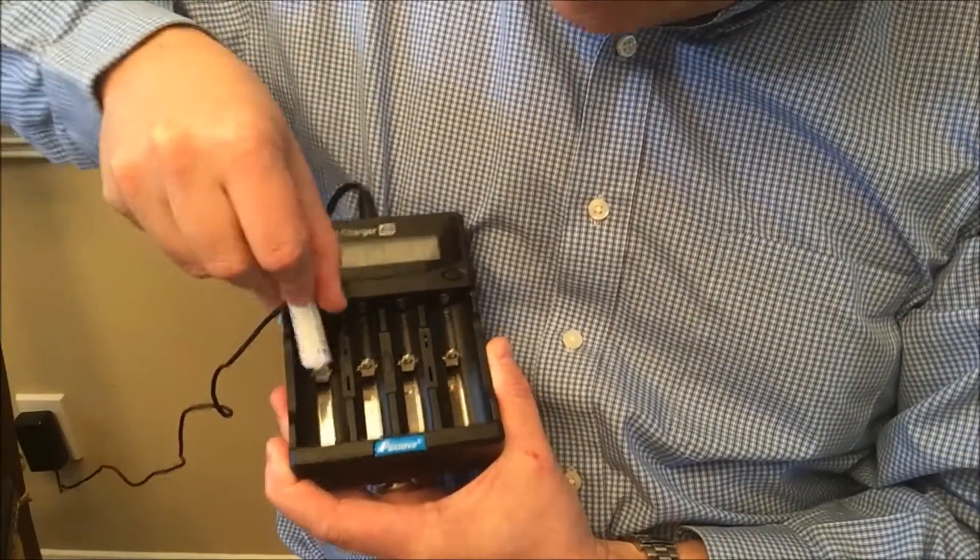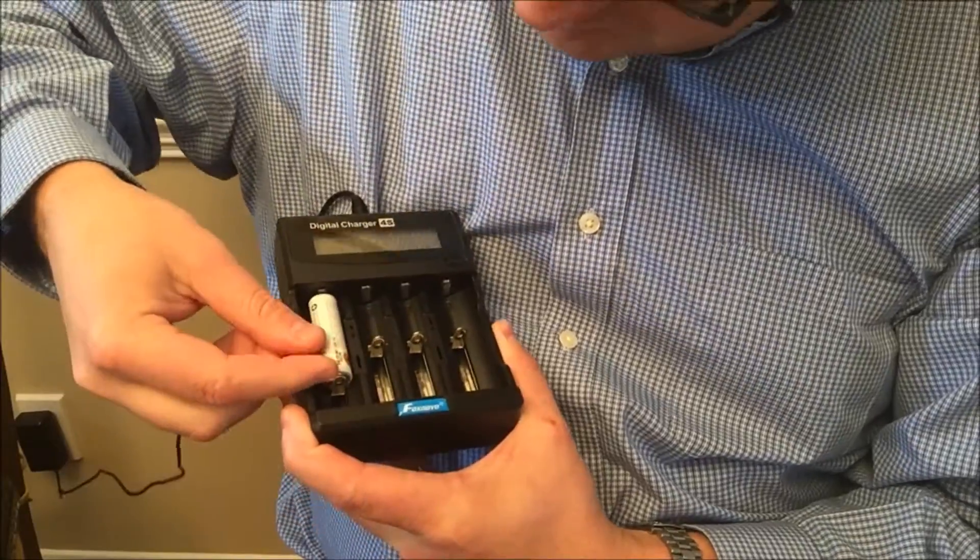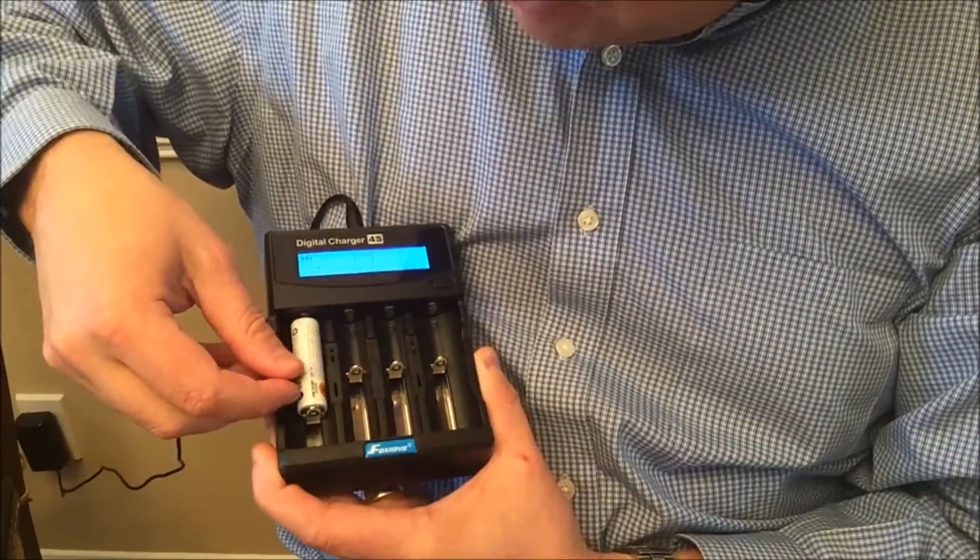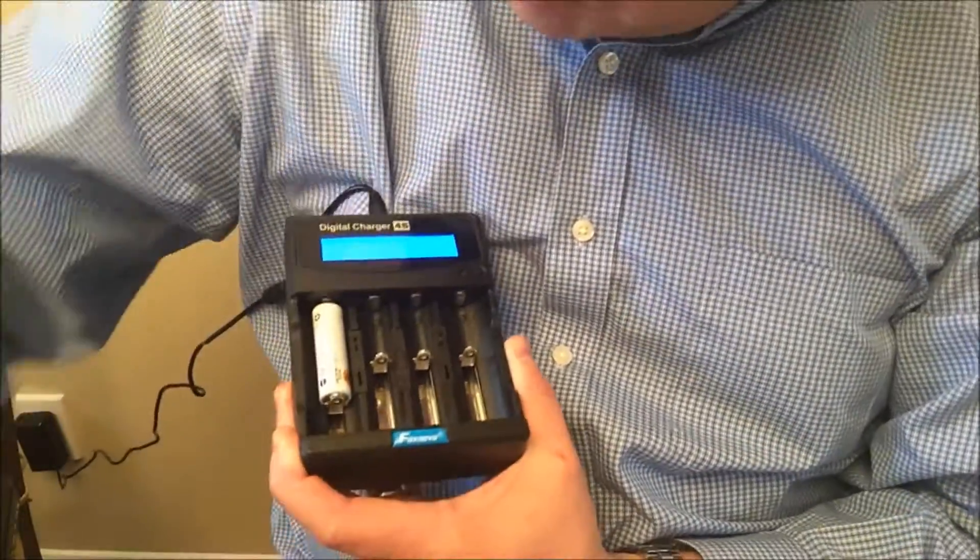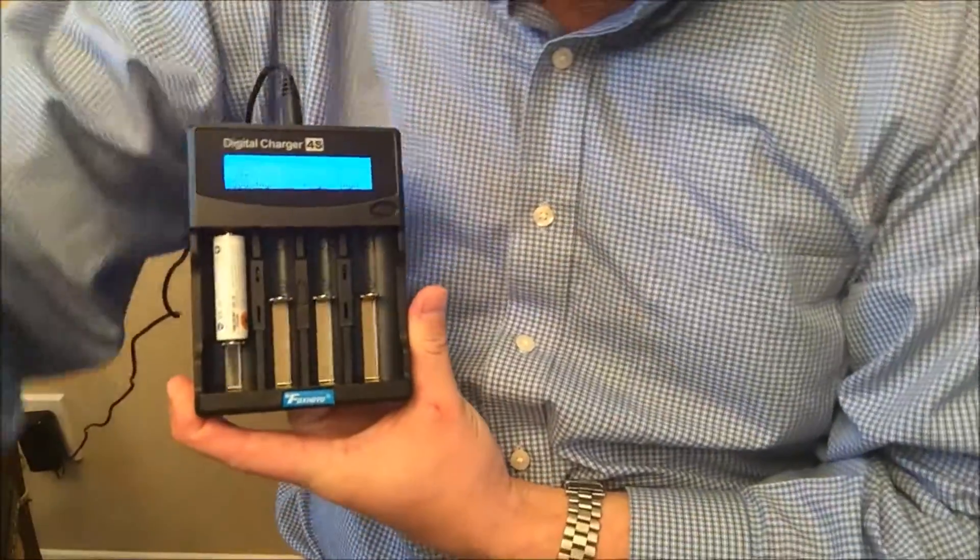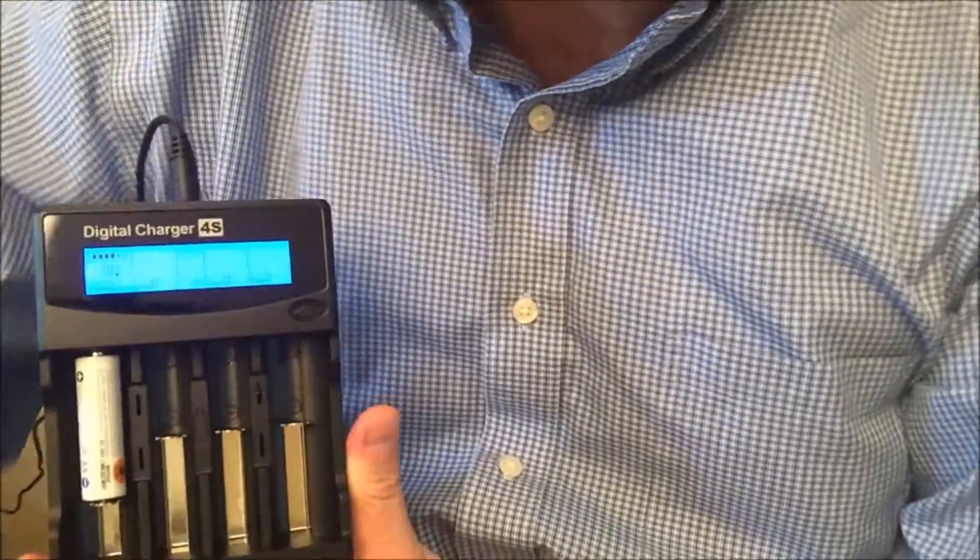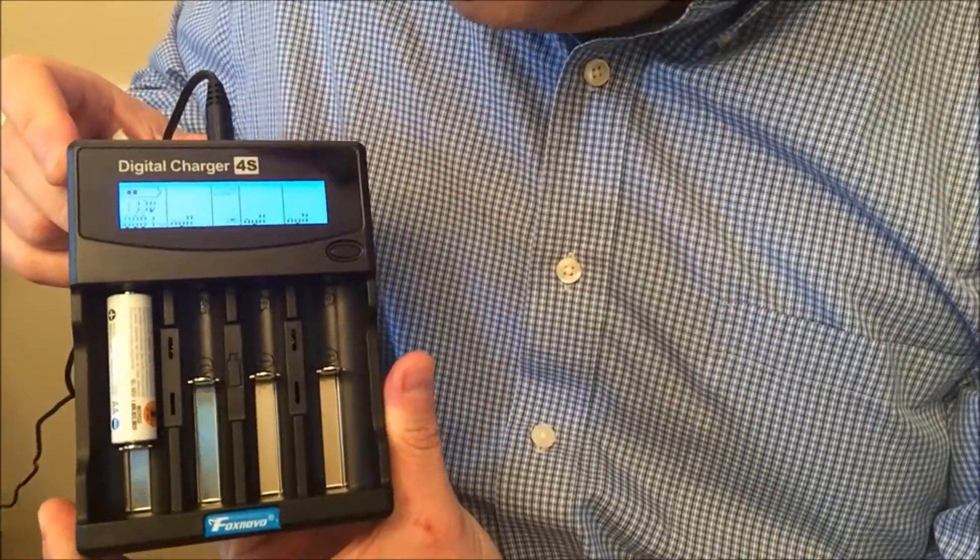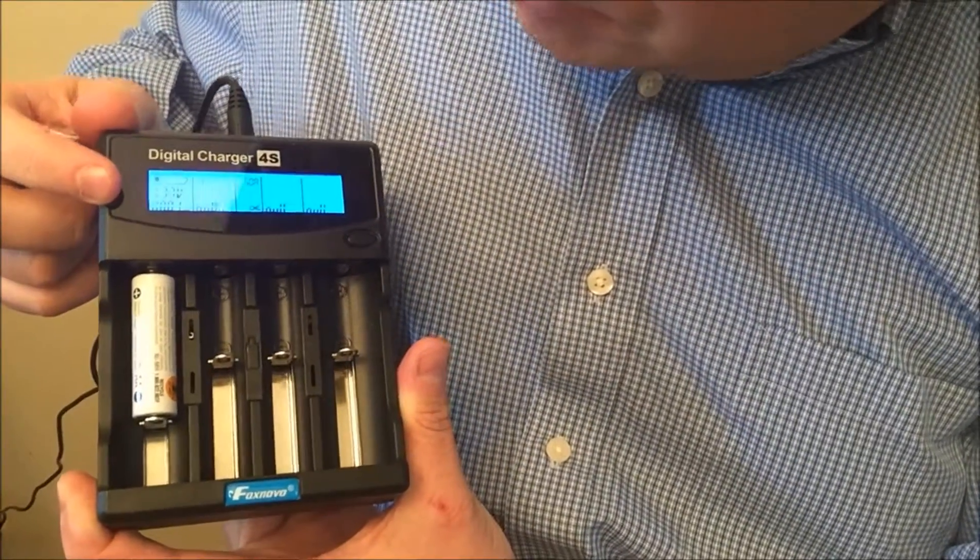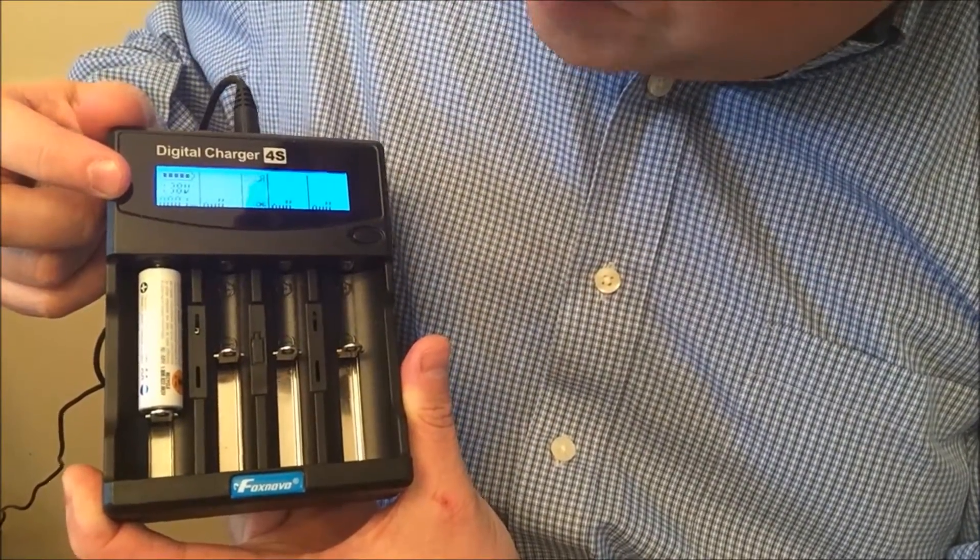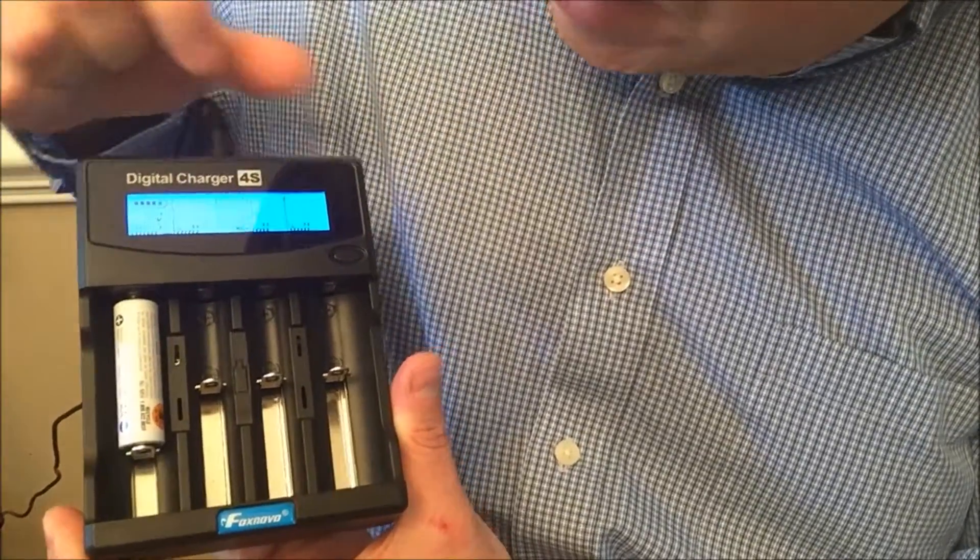Let's put it in backwards and see what happens. Actually, that one didn't get put in backwards. So right there, it's telling me it's 1.36 volts. It's got 0.001 milliamp hour, so it's starting to charge it right now.